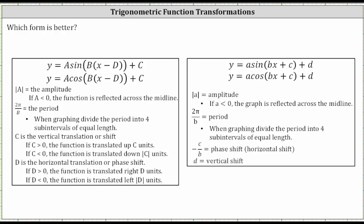A couple things to notice about the forms. On the left we are using capital letters; on the right we're using lowercase letters. On the left we have a binomial in the form of x minus d, and on the right we have a binomial in the form of bx plus c. The factored form has plus c on the end outside the parentheses, and the expanded form has plus d. The variables used don't matter — it is the placement or position of the variables that is important.